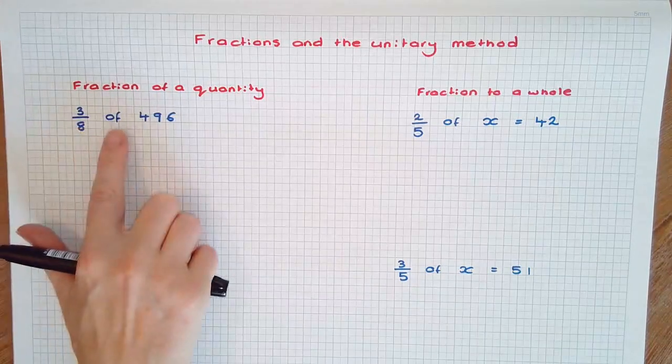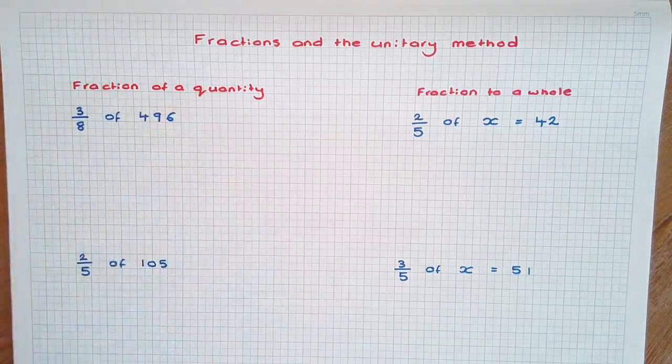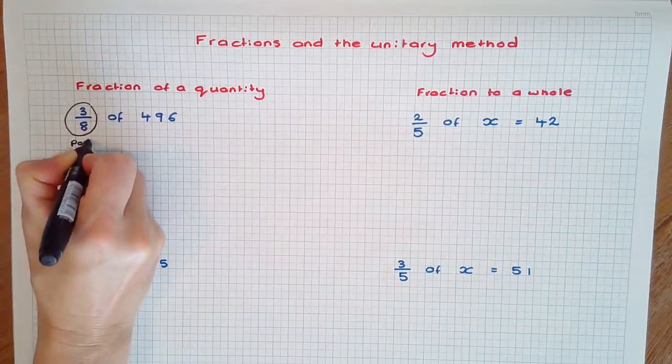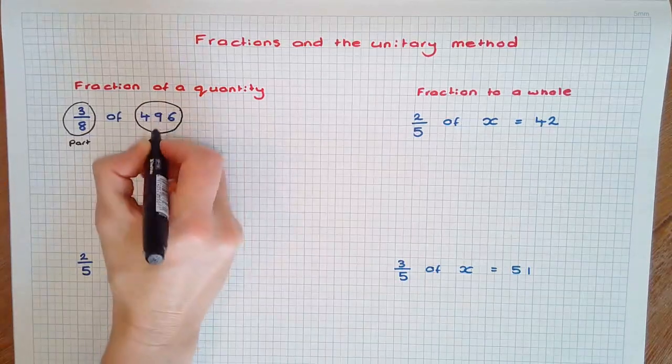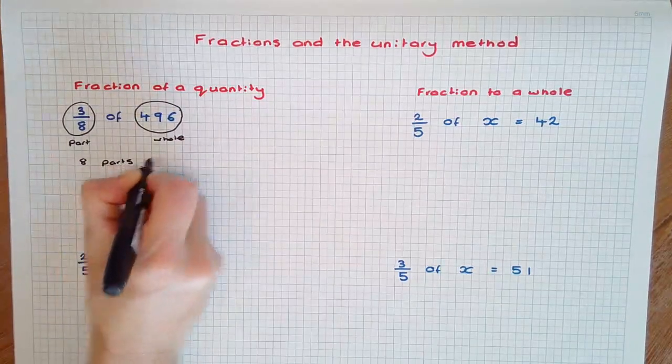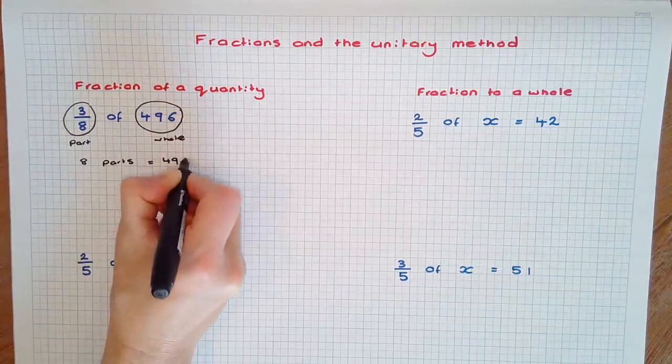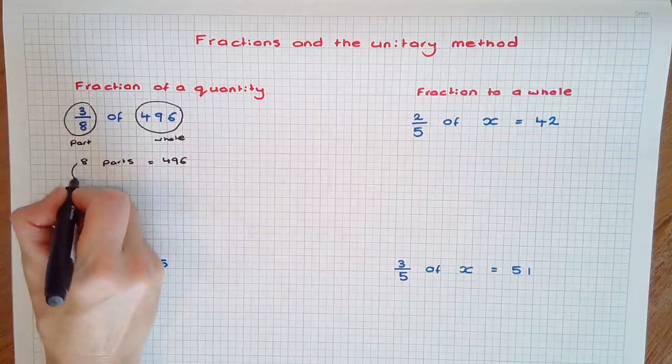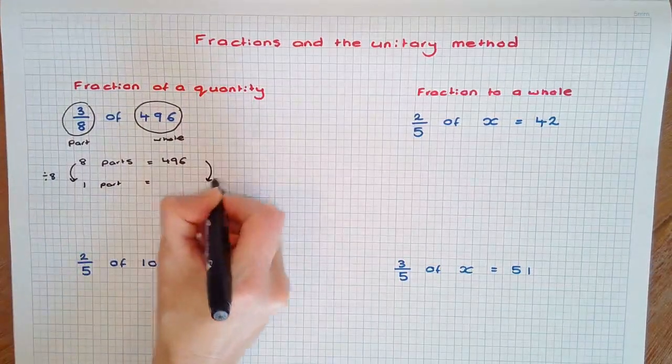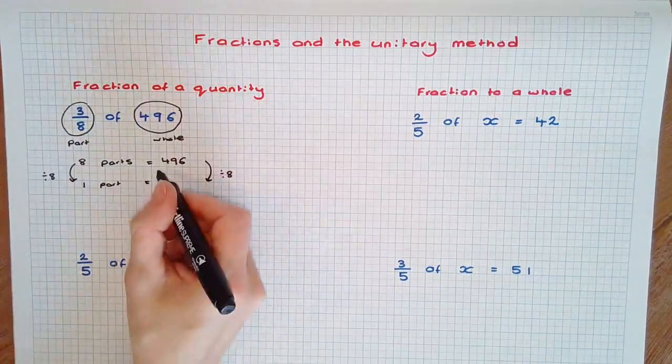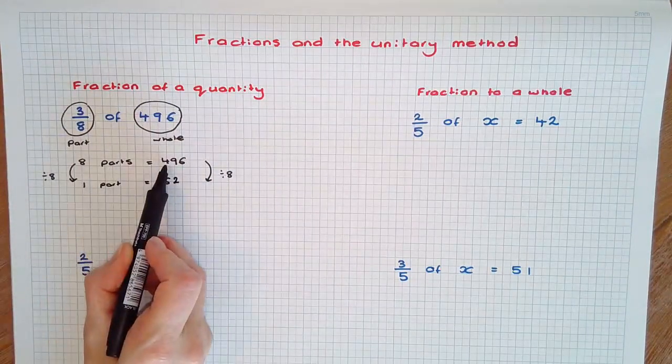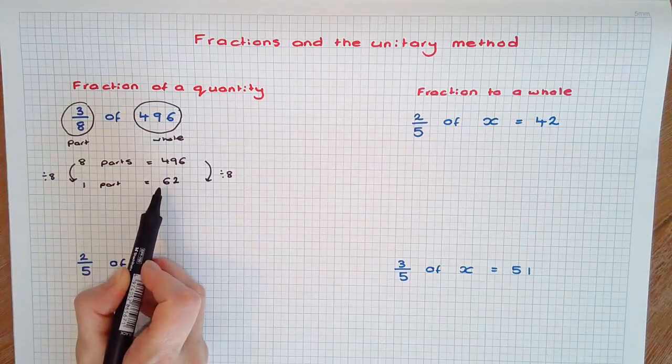Rather than multiplying 3 eighths times 496, we're going to use the unitary method. The part here is the 3 eighths and the whole is 496. So 8 parts equals the 496, the whole. To find one part, we'll divide the whole by 8 as well. 496 divided by 8 is 62. Therefore, 8 parts is 496, which is equivalent to one part being equal to 62.